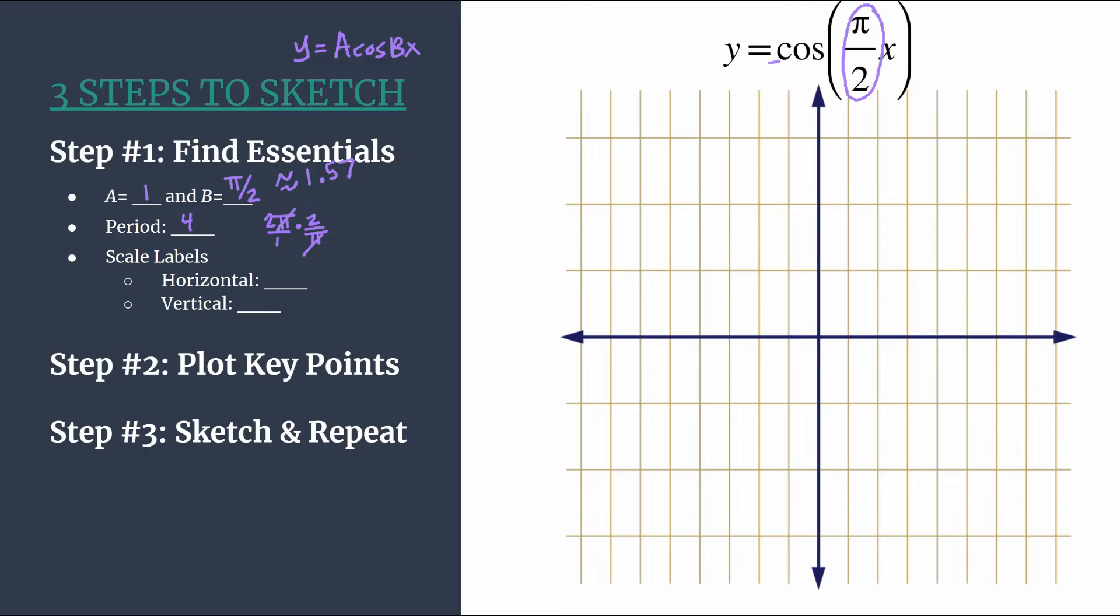So let's pick some scale labels. Remember with this method, the horizontal scale labels are chosen very intentionally. We take our period and we divide it by four. And that really sets us up for some good success in the next step. So all our key points will align with our tick marks. So take our period, divide by four. So we will count by ones for our horizontal axis.